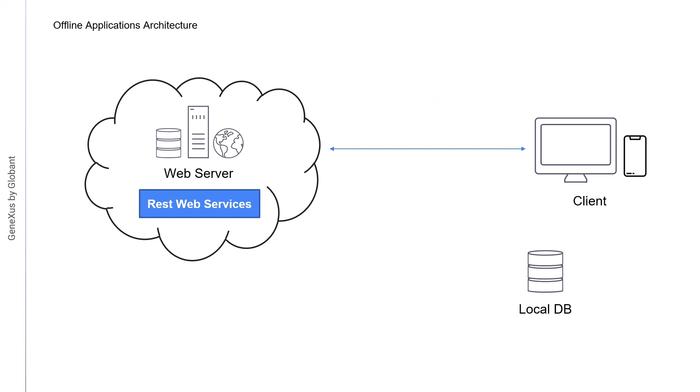In offline applications, in addition to a local database, all the programs, data providers, and business components used to obtain information from the central database are required. Now they should be programmed in the languages of the platforms for mobile devices so that they can access the local database. Regardless of whether there's an internet connection available, the application will always work on the local database.